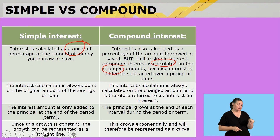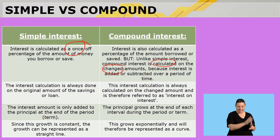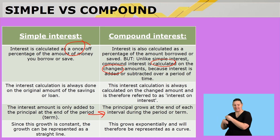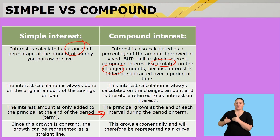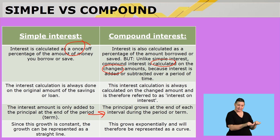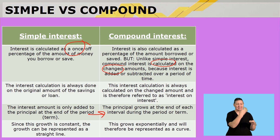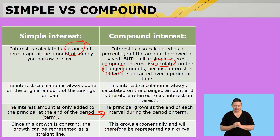With simple interest, the interest amount is only added to the principal at the end of the term. With compound interest, it is added at the end of every interval, not only at the end of the term. Since the growth is constant, simple interest can be represented as a straight line on a graph, but compound interest grows exponentially and is therefore represented as a curve.